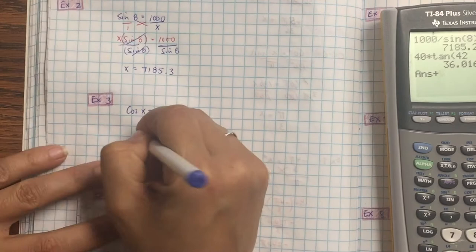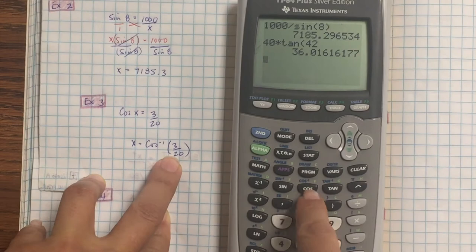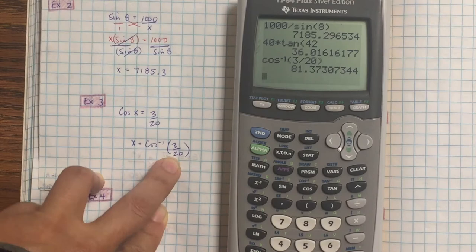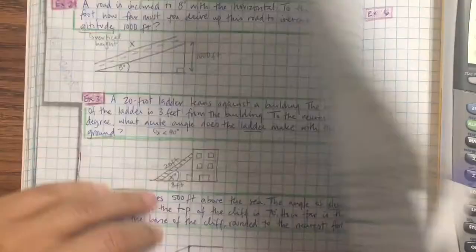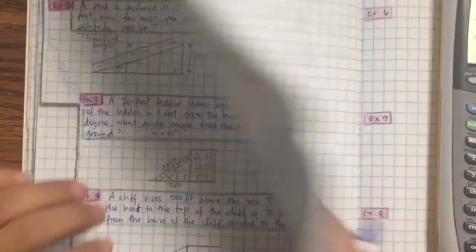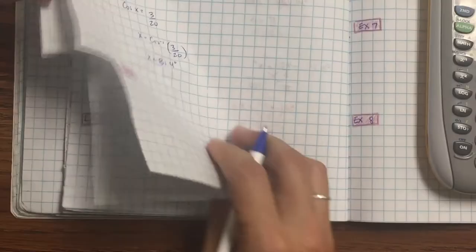So you go second on cosine, so that's going to give you the inverse, and 3 over 20, just like we practiced in the previous video. I believe this is also the nearest tenth. So that 7 is going to make that 3 go up 1, so it's 81.4 degrees. I'm just going to double check the units. Don't forget to write down the units, so feet and degrees.